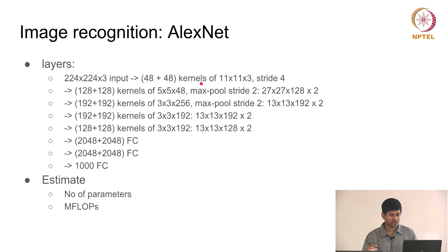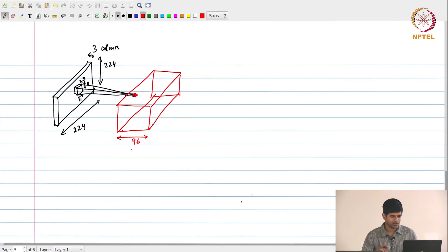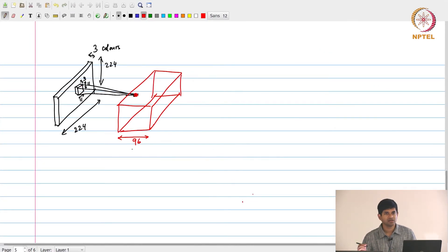Roughly what you can see is in order to compute one kernel, it involves 11 into 11 into 3 multiply adds to compute one dot product, one output. The number of outputs is going to be that into 55 into 55 because you are doing a stride of 4, and into 96 because there are 96 such outputs.